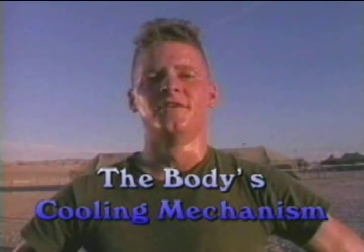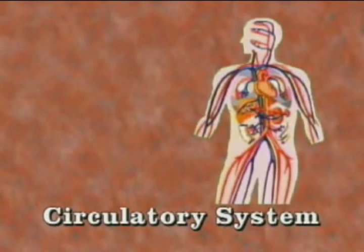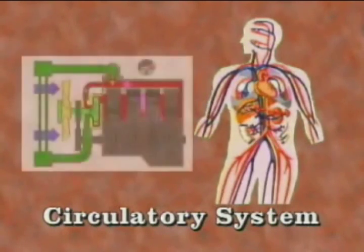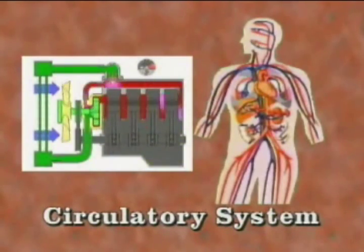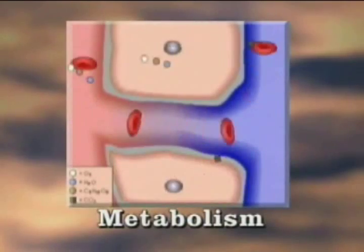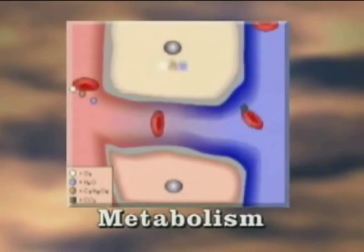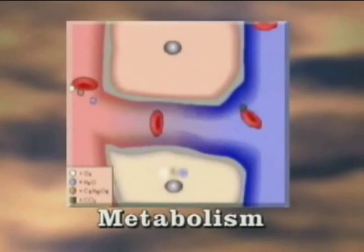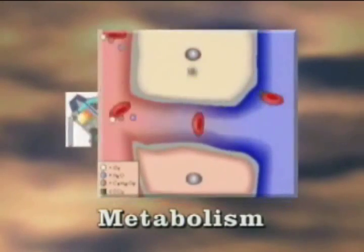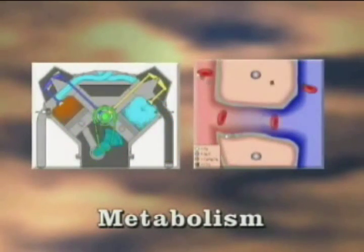Let's look at the cooling mechanism of the body and how it regulates body temperature. The primary cooling system of the body is the circulatory system. It acts very much the same as the cooling system of the engine in your automobile. Your metabolism has the function of burning fuel or nutrients and oxygen within your cells which creates heat, much the same as the combustion inside your car's engine.